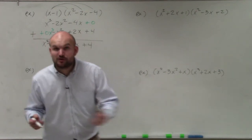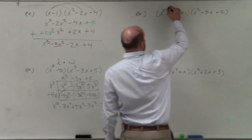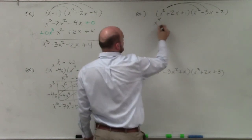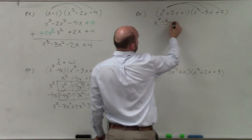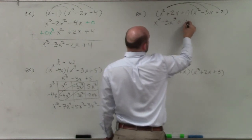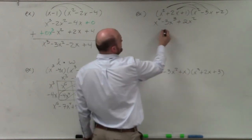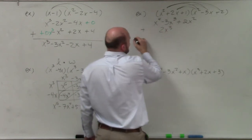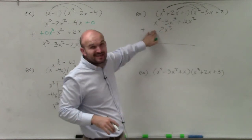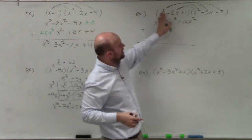Now let's do the vertical method with trinomials times trinomials. We multiply x² times every single term: x² times x² is x⁴; x² times -3 is -3x³; x² times 2 is +2x². Then for the next row, 2x times x² gives 2x³ — make sure to align it with the x³ column, since you can't add x³ to x⁴.